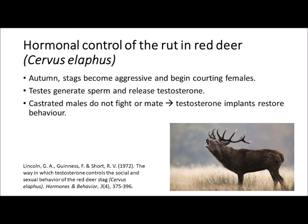You can find some really useful description of the hormonal control of rutting behaviour in red deer in the older literature. This paper from the 1970s explains the link between testosterone, the development of the stag's antler and aggressive behaviour, and consequently the way in which the rut is controlled hormonally. In autumn stags become aggressive and they start to court their females, and at the same time interactions between males increase as competition becomes more commonplace. This can be experimentally tested by looking at the behaviour of castrated stags. Those that have been castrated do not fight or attempt to mate with the hinds, but if you artificially replace their levels of testosterone with an implant, you restore their aggressive competitive rutting behaviour.